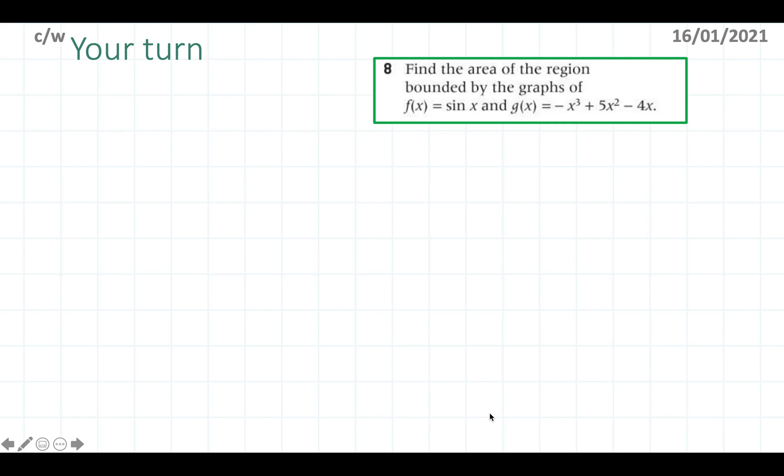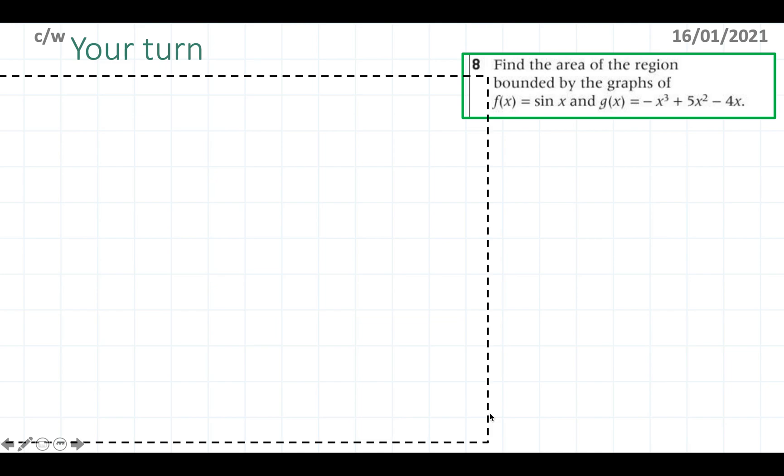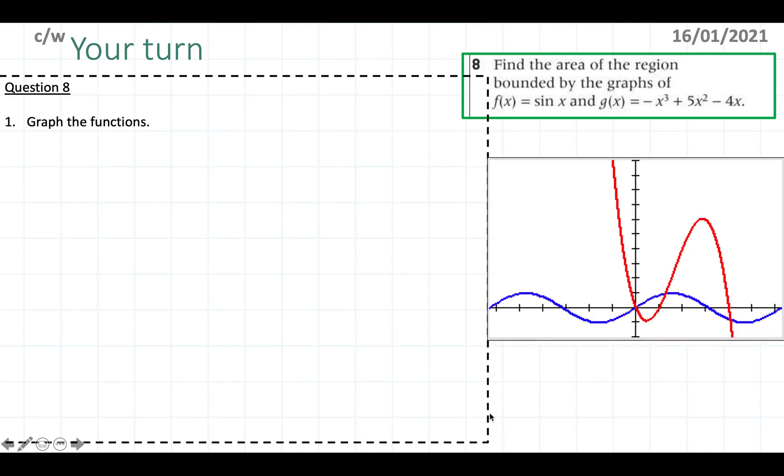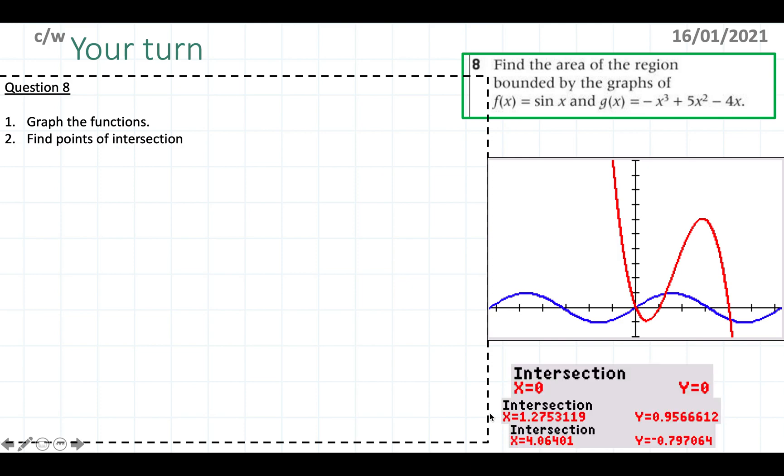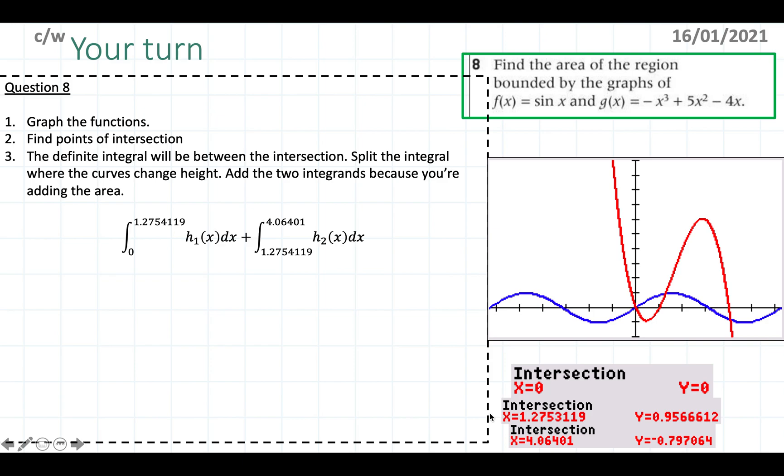One more question. Find the area of the region bounded between these two graphs, something similar to what we've done in the beginning. Again pause the video, try it on your own following the same exact steps. I'm not going to go through the steps in too much detail but I'm going to lay them out. If you've done it, you're going to graph your function. This is what you're going to get. I have my sin x as the blue function and then the g(x) as the red function. I found the points of intersection. These are the points of intersection, so I know the integral has to go from 0 to 1.3 and then 1.3 to 4.1. Again I'm rounding the numbers.